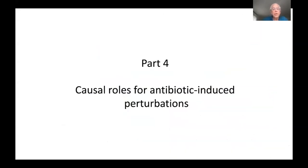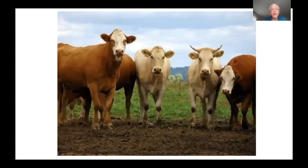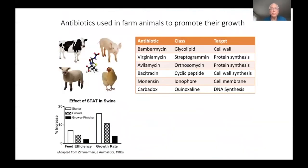That is correlational. Part four is to look at causal roles for antibiotic-induced perturbation. This work began with the understanding that farmers have been using antibiotics for the last 70 years to fatten up their farm animals — a procedure called growth promotion — used from chickens to cows to bring animals to market earlier. Growth promotion works for just about any antibacterial that has been tried, regardless of chemical structure, class, target, or spectrum. Antivirals do not work; antifungals do not work. Importantly, the earlier in life the antibiotic is started, the higher the effect on growth rate and feed efficiency — the conversion of food calories to body mass.